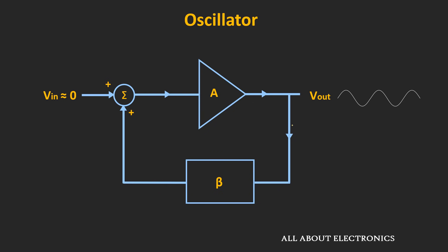The answer is that thermal noise is present in every circuit. This thermal noise contains all frequency components, starting from a few hertz to even hundreds of gigahertz. So initially, whenever this oscillator is turned on, all the frequency components of this thermal noise will get amplified by the amplifier, and the amplified output of this thermal noise will be given as the input to the feedback circuit. And like mentioned, this feedback circuit is a frequency selective circuit.